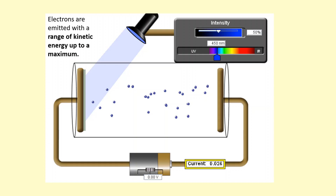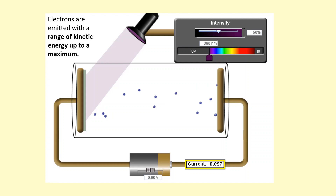During the photoelectric effect, provided that we're shining light above a threshold frequency, the electrons are going to be emitted with a range of kinetic energies up to a maximum kinetic energy. So some will come out very slow and some will come out with a certain maximum kinetic energy. One thing we could do to change this maximum kinetic energy is to increase the frequency of the light — in other words, decrease the wavelength. This will cause the electrons to come out with a higher maximum kinetic energy.